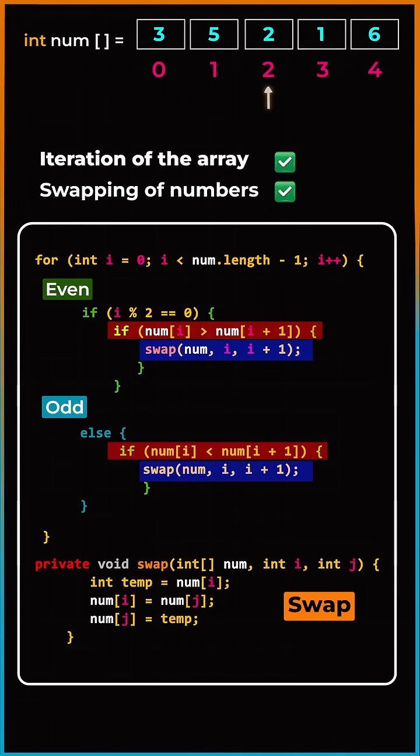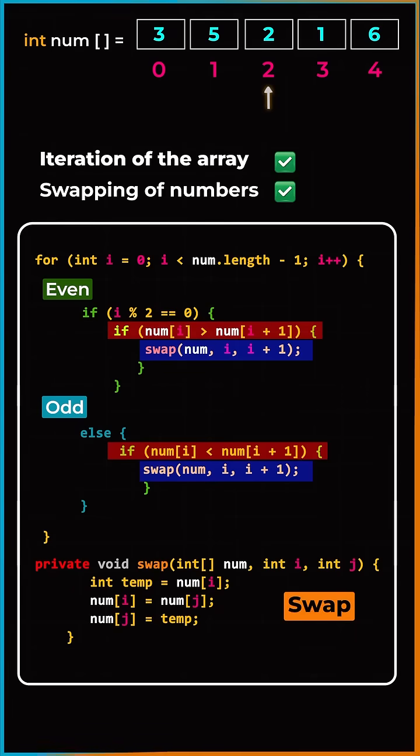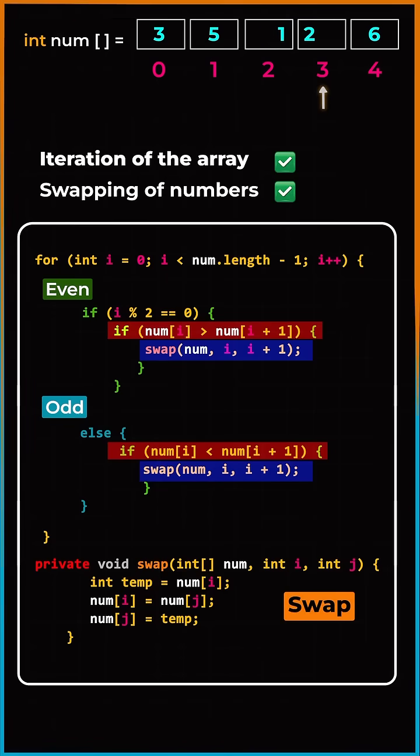So till index number 2, there won't be any swap as they are in the correct order. But the moment we reach index 3, we will compare 2 with 1. 2 is greater than 1, so just swap.